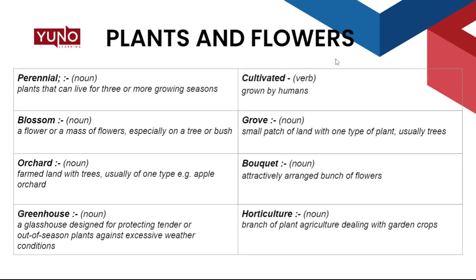Some other terms are: 1. Perennial — noun, plants that can live for three or more growing seasons. 2. Blossom — noun, a flower or a mass of flowers, especially on a tree or bush. 3. Orchard — noun, farmed land with trees, usually of one type, for example an apple orchard. 4. Greenhouse — noun, a glass house designed for protecting tender or out-of-season plants against excessive weather conditions, be it extreme cold or extreme heat.